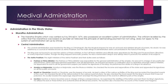The Maratha administration: The Maratha Empire carved out by Shivaji in 1674 possessed an excellent system of administration. The central administration was headed by the king or Chhatrapati. Like the Mughal emperor, he was an autocrat wielding all sorts of powers. He was assisted by a council of ministers known as the Ashtapradhan, but the reins of administration remained in the hands of the king. The king was not bound to accept the advice of these ministers, and all ministers and officials were appointed by the king.